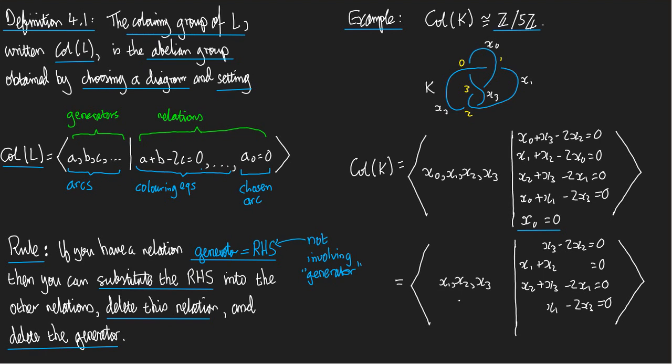Now, none of these any longer, none of these relations any longer have the form generator equals something. But we can easily rearrange them until they do. And let's rearrange the one at the bottom here. So instead of having x1 minus 2x3 equals 0, let's have x1 equals 2x3. So generator equals right-hand side. So now I can do the step again, the rule. I substitute the right-hand side into all the other relations. So I substitute 2x3 for x1. So here's an x1, get rid of it, 2x3. Here's an x1, get rid of it, and replace it with 2x3. So this is going to become minus 4x3. Delete the relation. Delete the generator. And then let's simplify as well here. This is x2 minus 3x3.